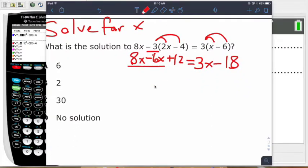And then you still have the 8x out there in front that you drop down. Next step, I like to combine all the like terms on the left-hand side and then all the like terms on the right side. On the left-hand side here, we can combine the 8x and the 6x. That combines to 2x. So we're going to say 2x plus 12, and then it equals 3x minus 18.